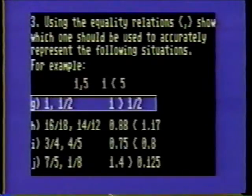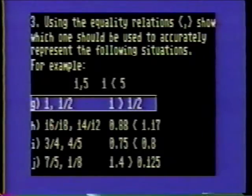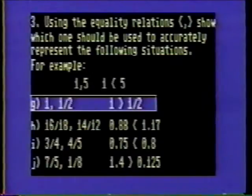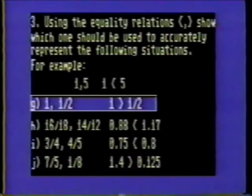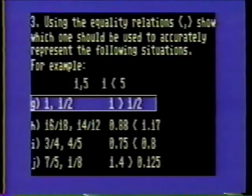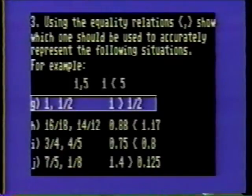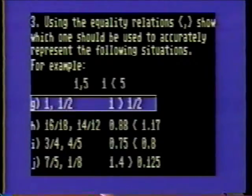In problem 3G, positive one is greater than one half. We learned that the further a positive number is from zero, the greater its value. Therefore, positive one is greater than positive one half because it is further from zero than positive one half.